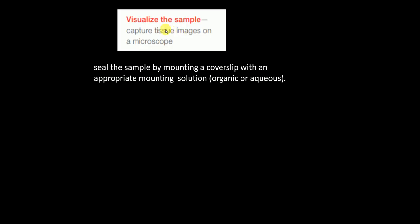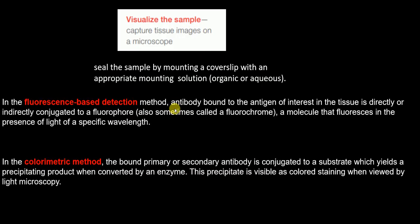Finally, we visualize the sample by capturing tissue images on a microscope. To do this, we seal the sample by mounting a cover slip with an appropriate mounting solution, which can be organic or aqueous. In fluorescent-based detection, the antibody bound to the antigen of interest is directly or indirectly conjugated to a fluorophore — sometimes called a fluorochrome — which is a molecule that fluoresces in the presence of light of a specific wavelength.